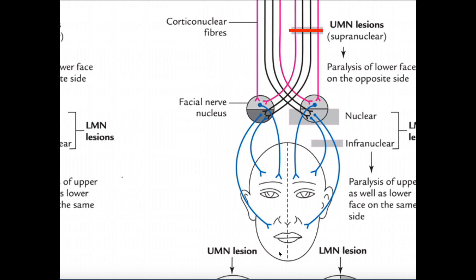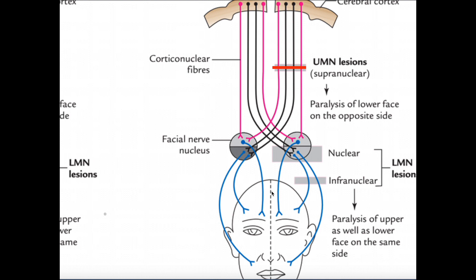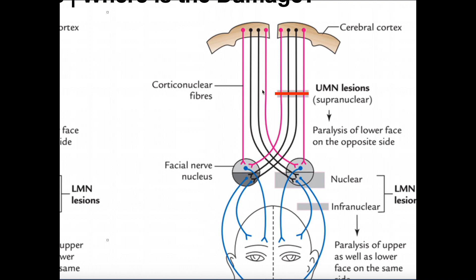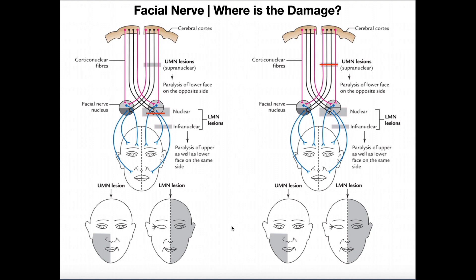We have an upper motor neuron lesion on the left side, producing a right face droop. But do we lose tone on the forehead muscles? No. Yes, we have a lesion on the left side, but we still have all the neurons on the right side intact. This right-side upper motor neuron synapses with a lower motor neuron going to the left forehead — so we still have innervation to the left forehead. And this pink one synapses with a lower motor neuron going to the right forehead. In an upper motor neuron lesion, as long as it's just one side, the functioning other side still provides innervation to both foreheads.